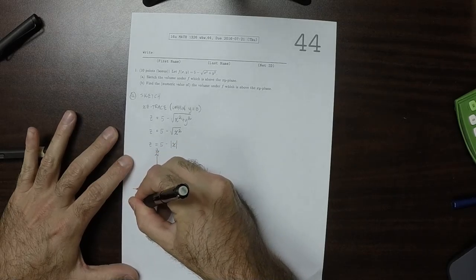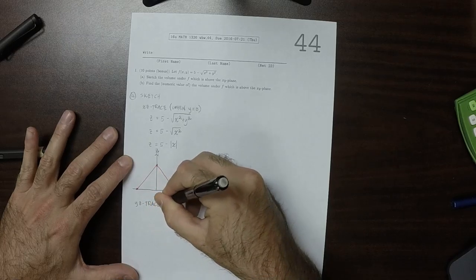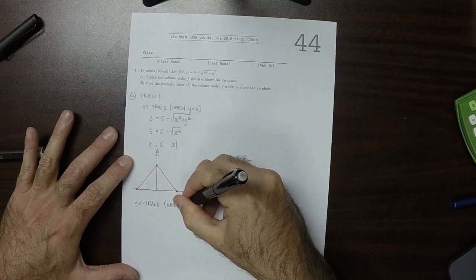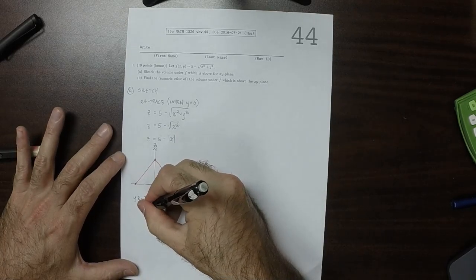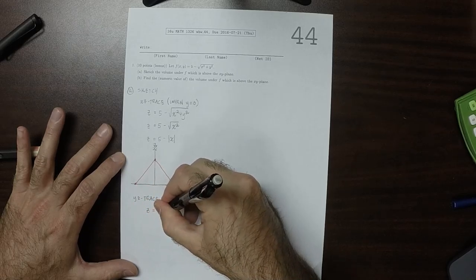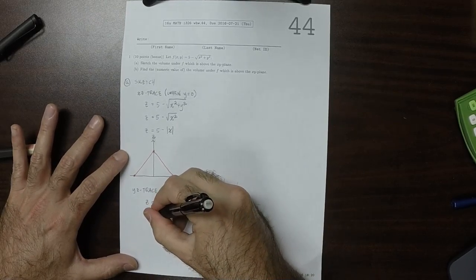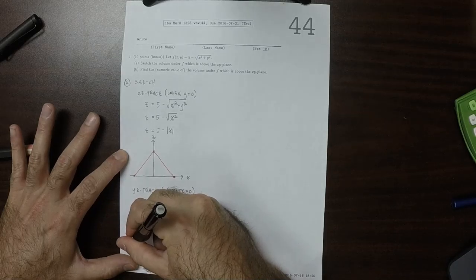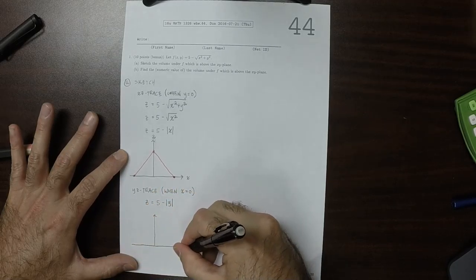So that's what the xz trace looks like. The yz trace, that is to say when x is 0, through a symmetric argument, that is z is 5 minus absolute value y. And the picture is the same.